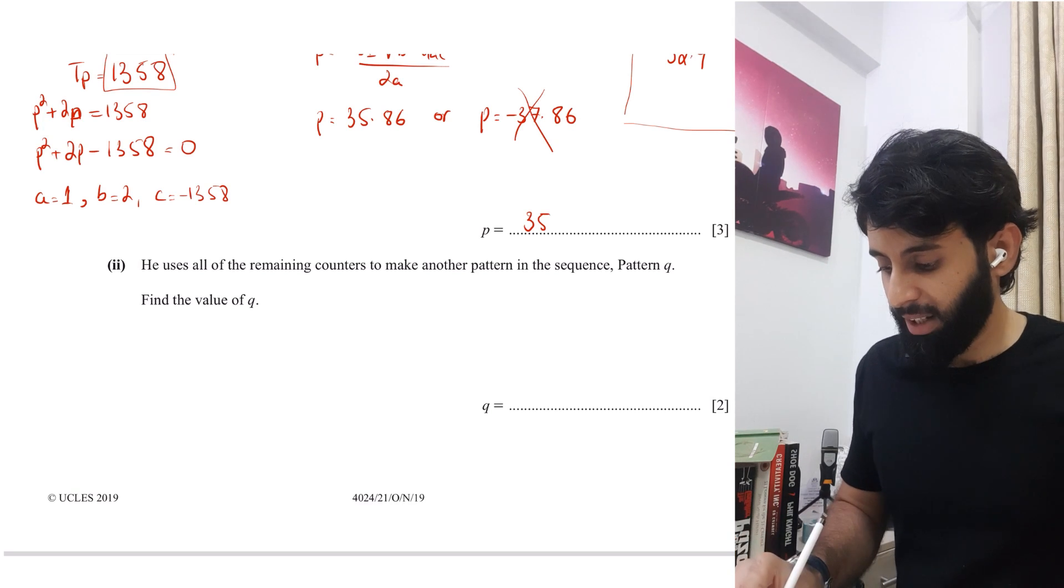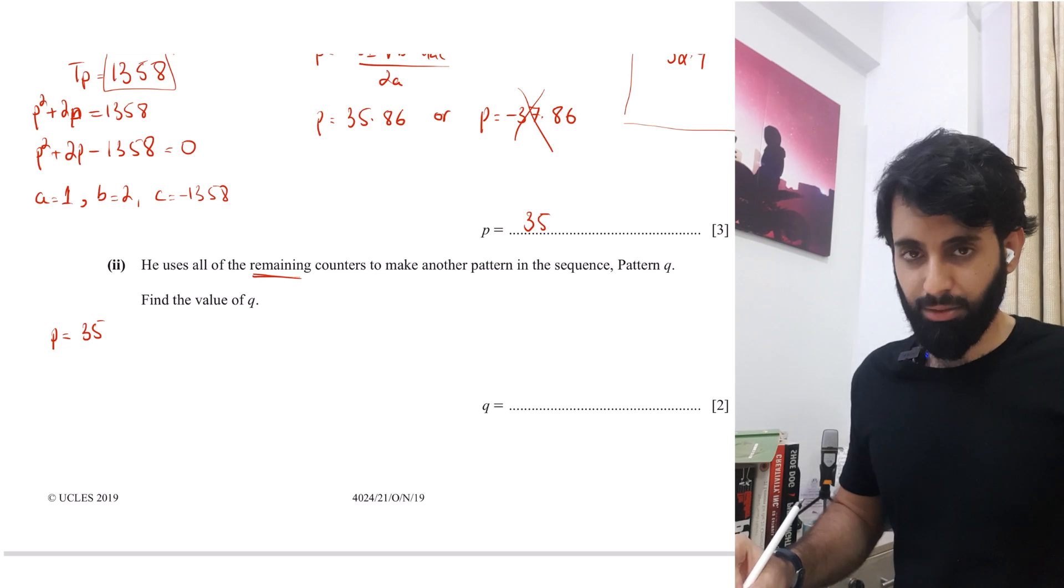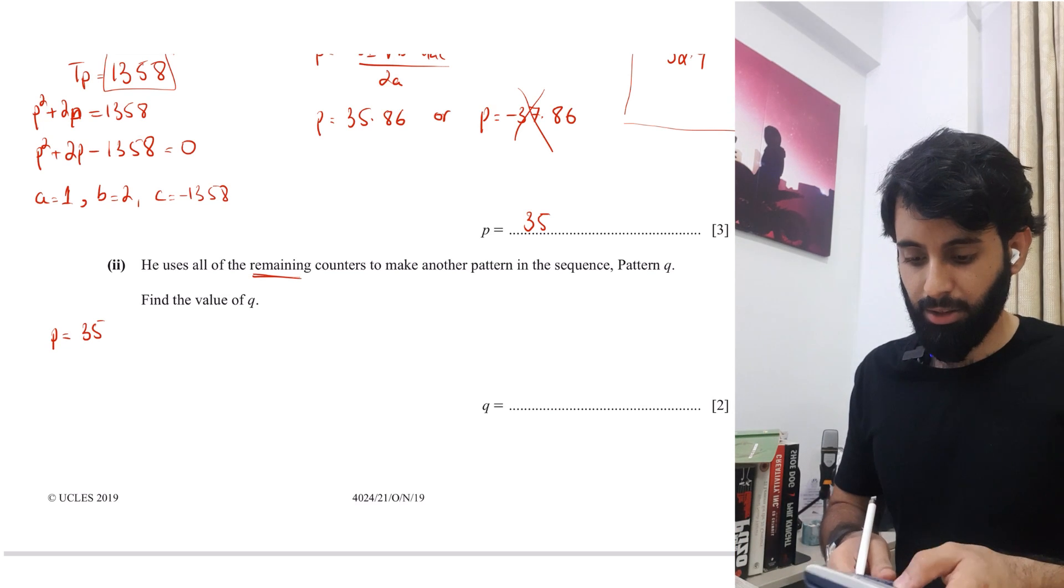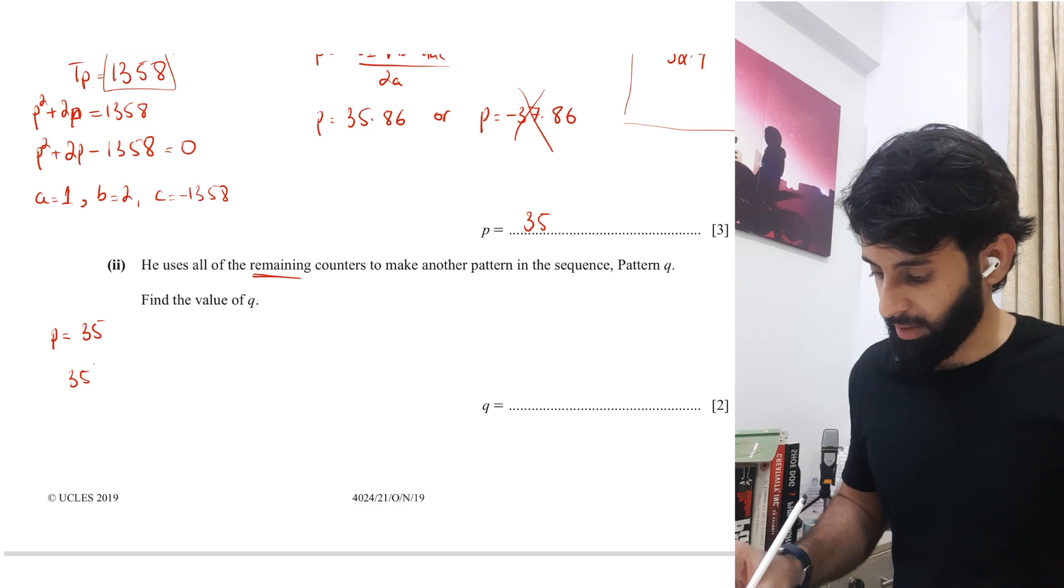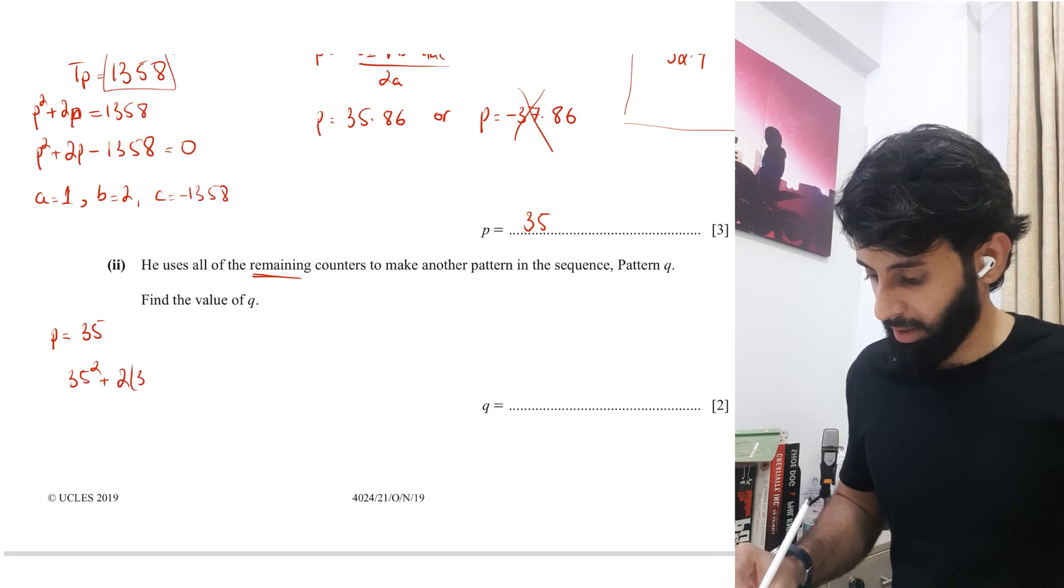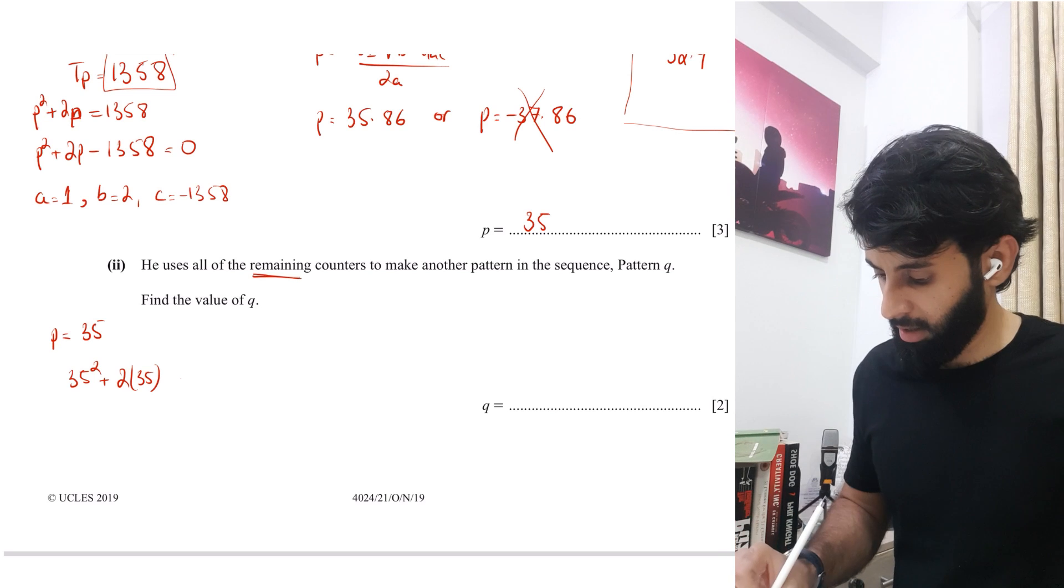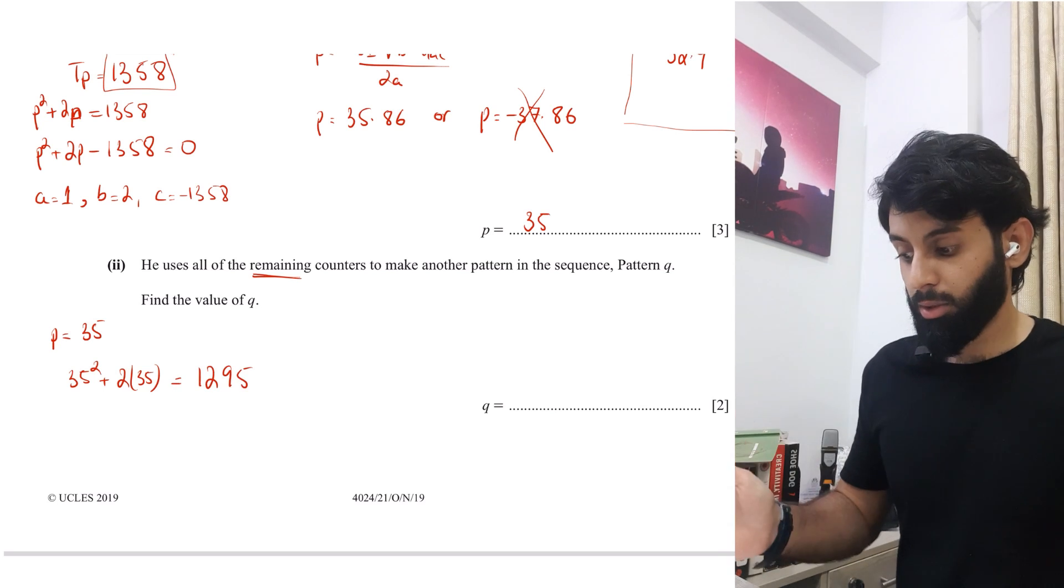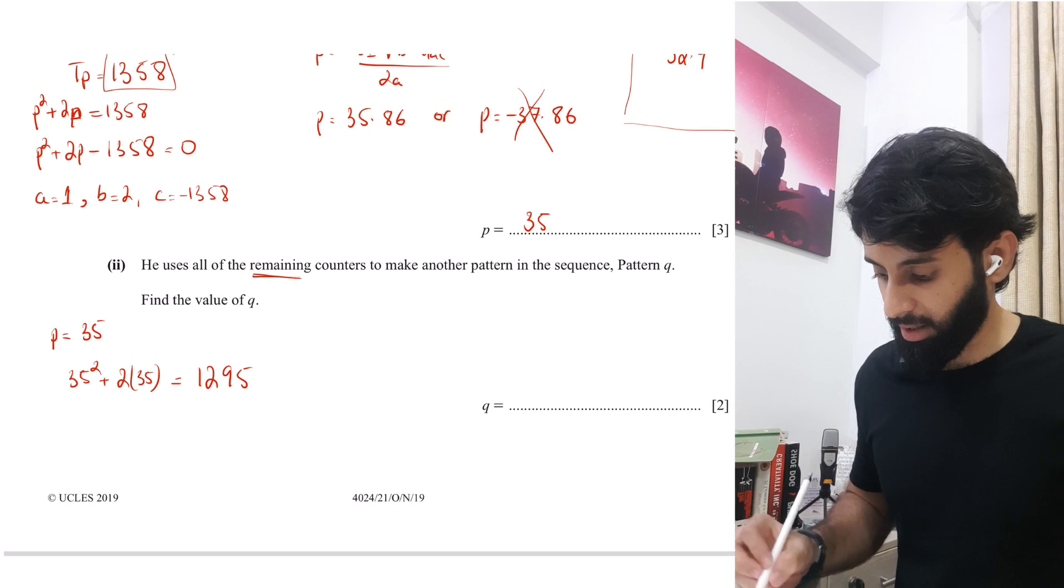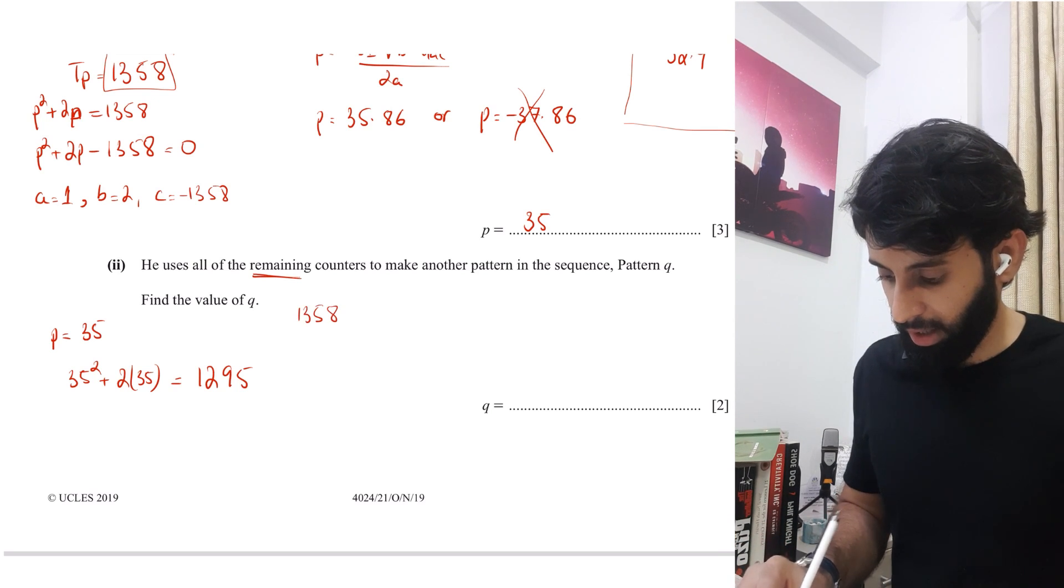Now, remaining counters. Now, remember he is making pattern number 35, which if I want to find out requires how many counters, I can simply do that by plugging 35 in place of N. So 35 square plus 2 times 35. So let's do that with the help of a calculator. So that means he's using 1,295 counters out of 1358. So how many are left? Let's work that out. So 1358 minus 1295 let's see.